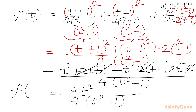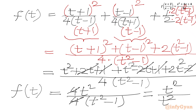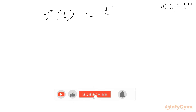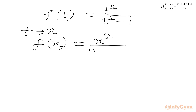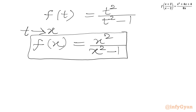So f(t) = 4t²/(4(t²−1)), and the 4s cancel to give f(t) = t²/(t²−1). Now we change the variable t to x, so our final answer is f(x) = x²/(x²−1).